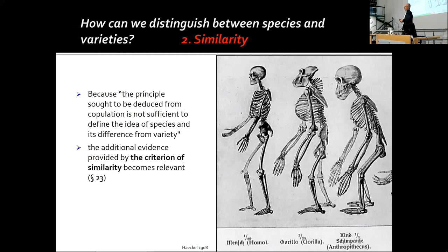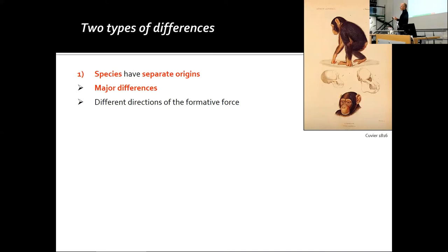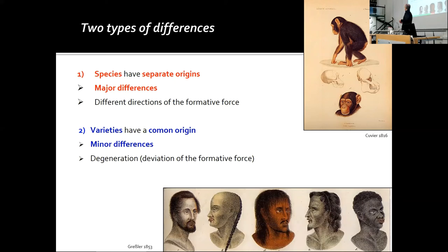If the test of population cannot be performed, we must resort to similarity. This is what Blumenbach actually suggests: we look at similarity. Humans and apes are not quite dissimilar, so we can assume they are separate species. Human races, by contrast, are much more similar to one another, so we can assume they are just varieties. Species have separate origins, major differences, and a different direction of the formative force. Varieties — the five he discusses — have a common origin and minor differences.